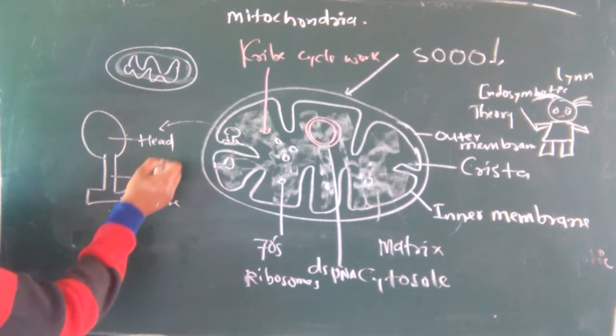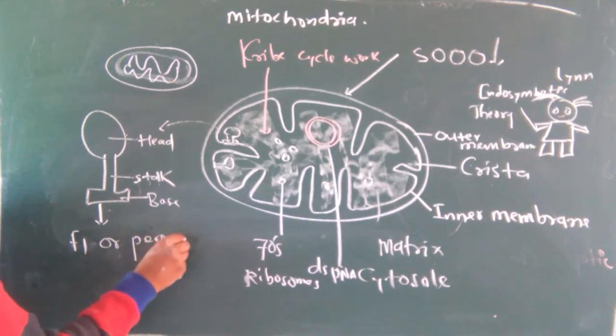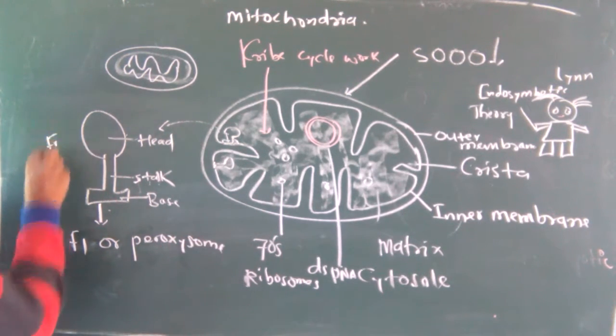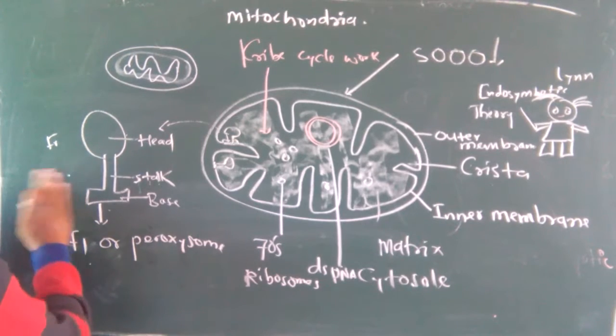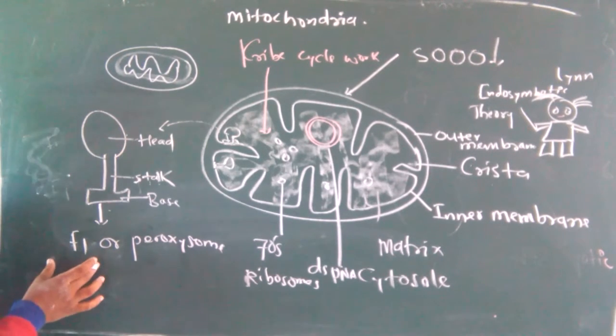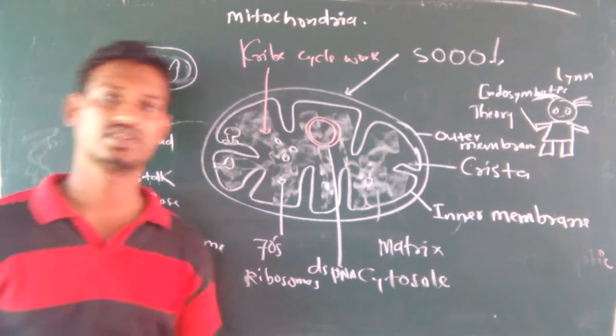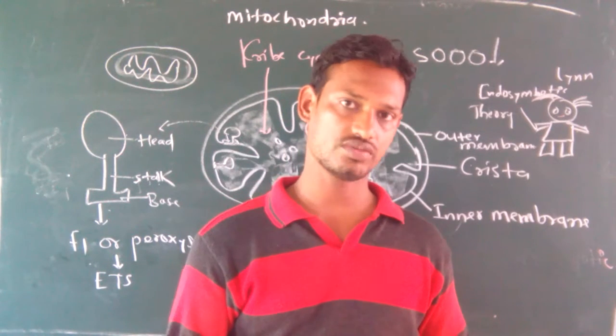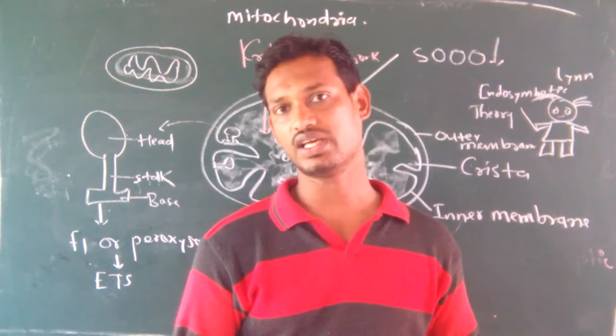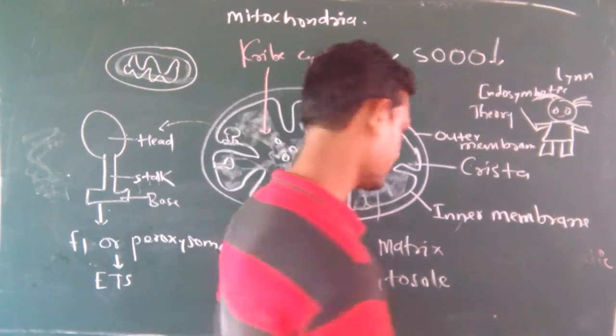Base, stalk, and head. These F1 particles, this is called F1 or oxysome. It contains two parts: F1 and oxysome or F1 particle. The F1 particle or oxysome contains all the enzymes of the five complex which is responsible for ETS. What is ETS? ETS means electron transfer system. Electron transfer system runs on F1 particle, and especially the energy synthesis on F1 particle in the form of adenosine triphosphate, ATP.